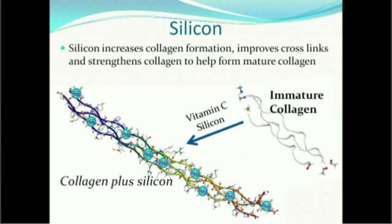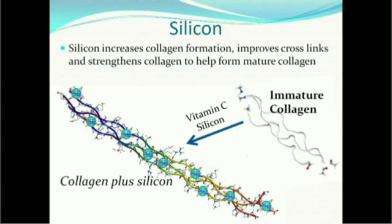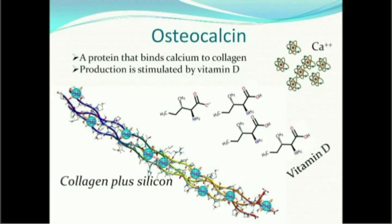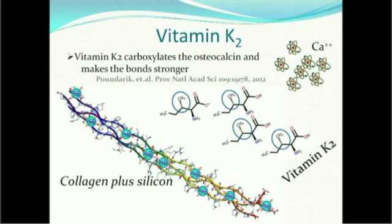Silicon gets itself embedded in the immature bone. Mature collagen needs calcium and magnesium to make it hard instead of remaining flexible like collagen in nails, hair, and skin. This requires osteocalcin — a protein that binds the calcium to the collagen. Production of osteocalcin is stimulated by vitamin D, but vitamin K2 carboxylates the osteocalcin and makes those bonds stronger.